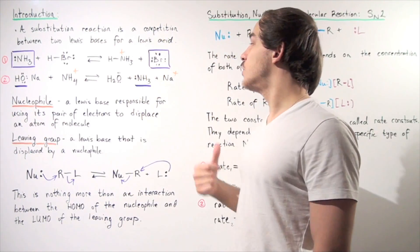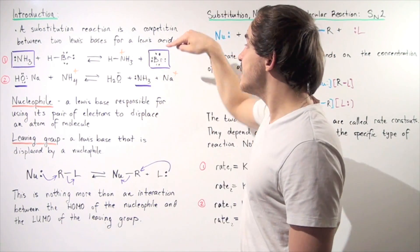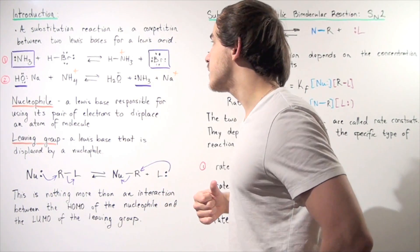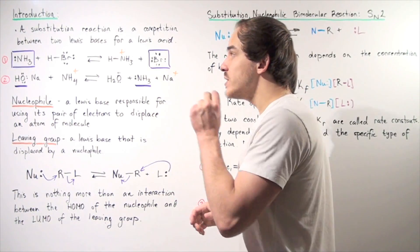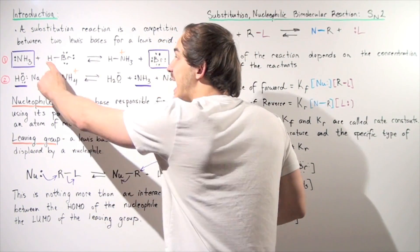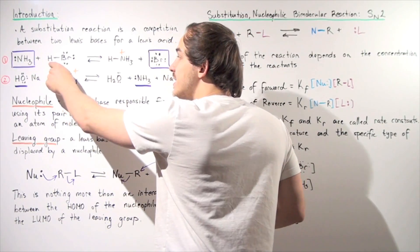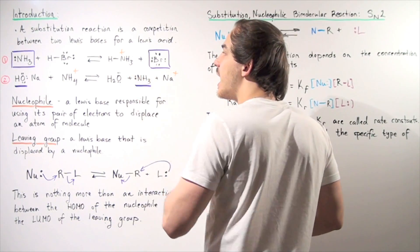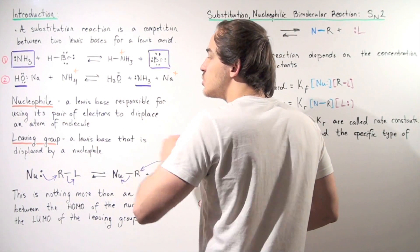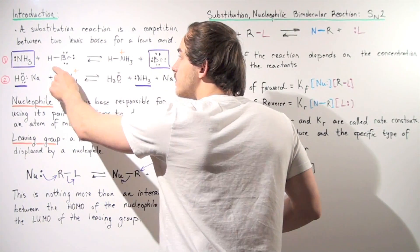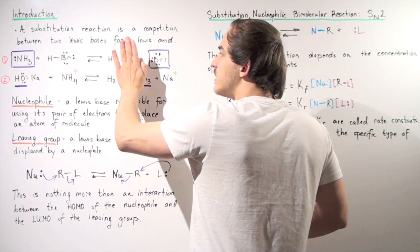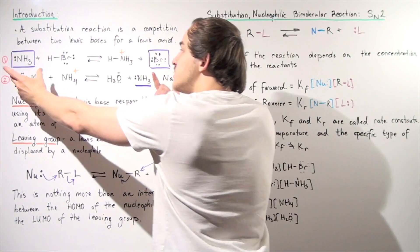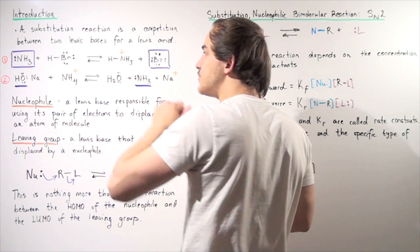Now, on the product side, this is our Lewis base. This contains the lone pair of electrons that can take away that H atom. Which one is the Lewis acid? The Lewis acid is this H atom — it's the H ion. Notice the H ion is attached to the bromine on the reactant side, while it's attached to the ammonia on the product side. So this H atom is the same exact atom: here it's found on the bromine and here it's found on the ammonia. So this H atom is our Lewis acid.